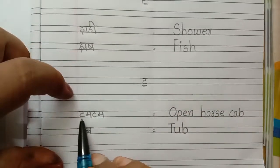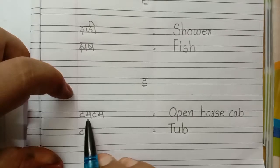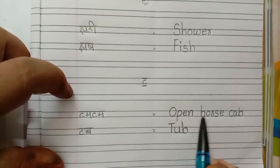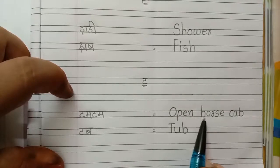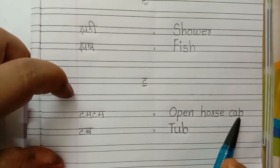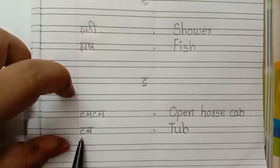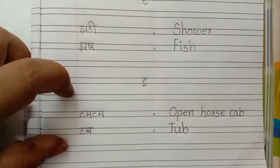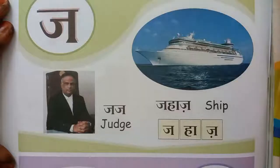TA words — TAMA, TAMTAM — TAMTAM means Open Horse Cab — O-P-E-N, H-O-R-S-E, C-A-B. Open Horse Cab. Next, TABA, TAB — TAB means TUB.